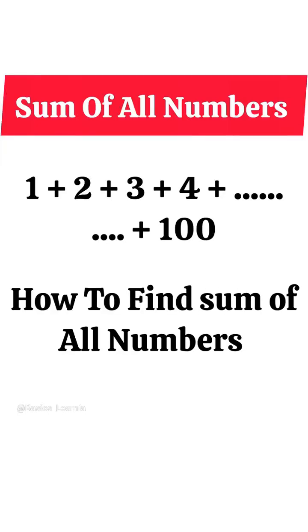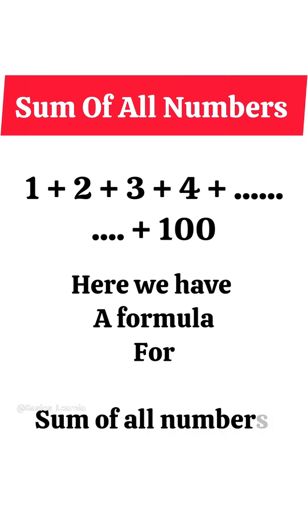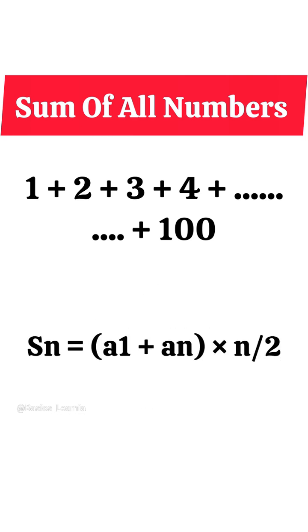How to find sum of all numbers from 1 to 100? Here we have a formula for sum of all numbers. Sn is equal to a1 plus An into n divide by 2.